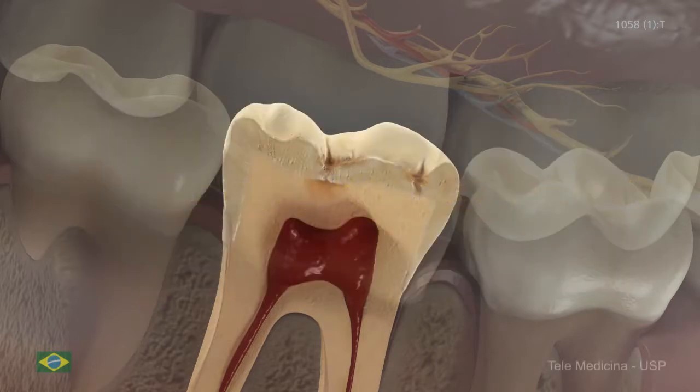Score 4: A shadow of discoloured dentin is visible through intact enamel. This characteristic is more noticeable when the surface is wet.